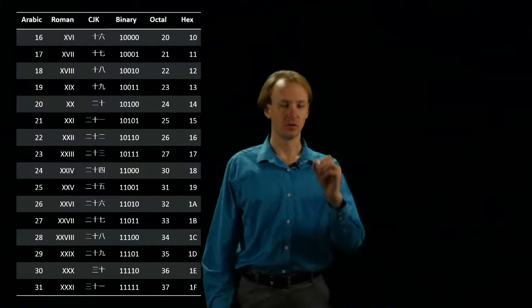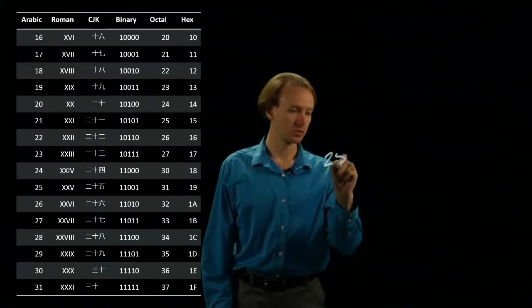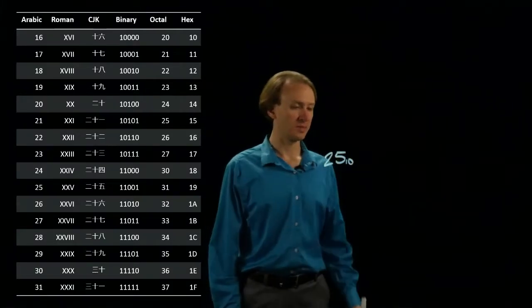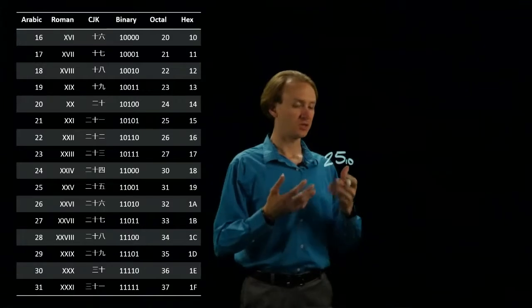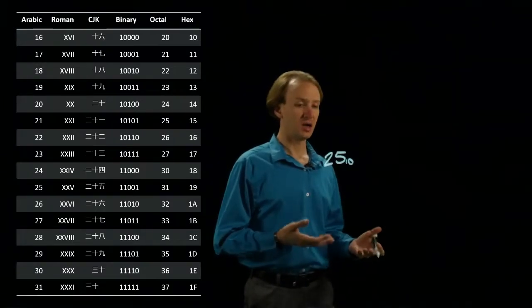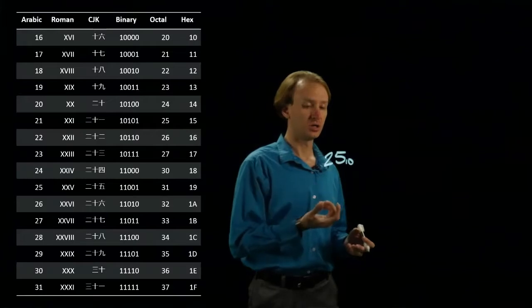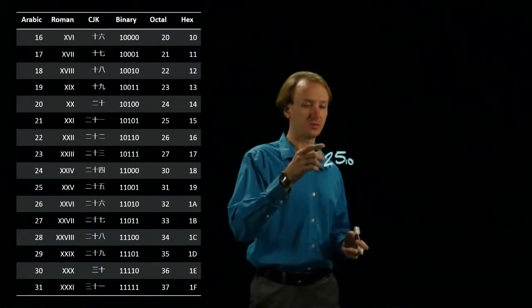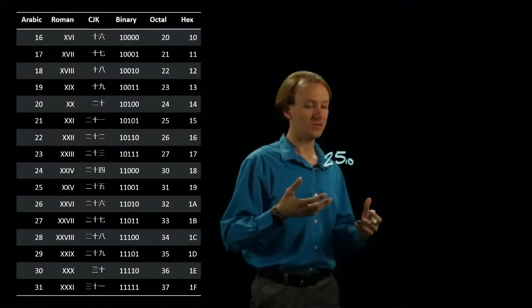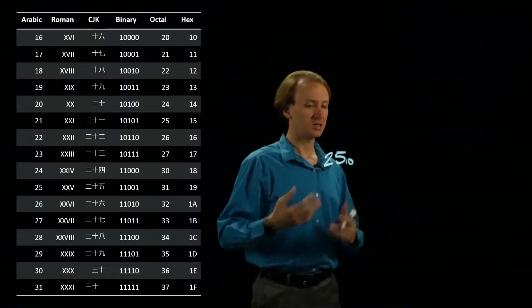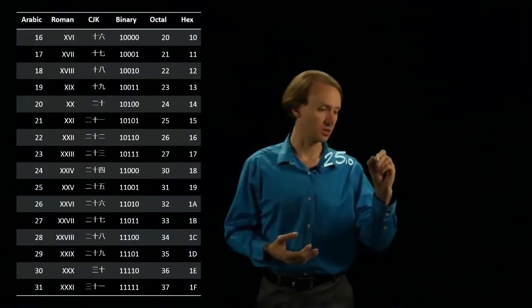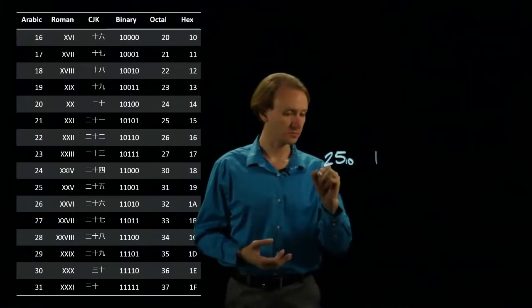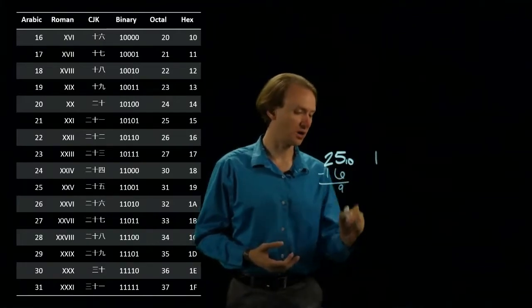So for example, 25 in base 10. If I want to convert this to binary, I'm going to be looking for exponents of 2. So I know there aren't any 32s in 25, but the next thing down is a 16, so I can pull out a 16. Subtract 16, that leaves me with 9.